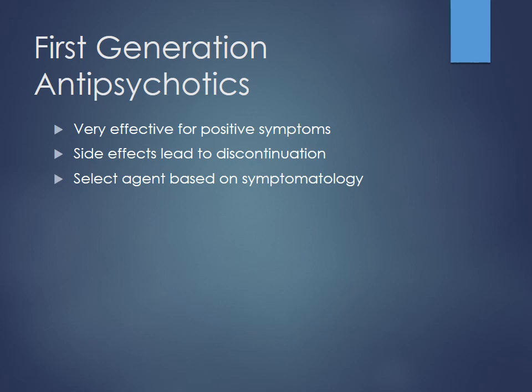First-generation agents are very effective for positive symptoms, but side effects lead to discontinuation — tardive dyskinesia being a big problem over years of use, and often irreversible even after stopping the drug. Agent selection is based on symptomatology. If a patient has really bad positive symptoms, a more potent D2 receptor blocker may be better versus something like chlorpromazine. These are starting to give way to the atypicals.